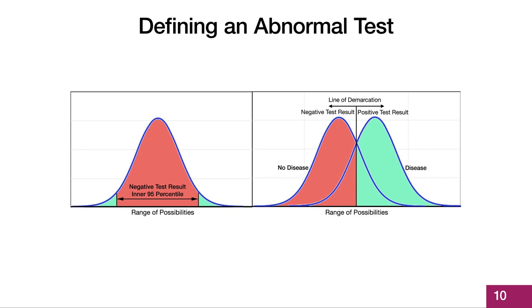We can use an understanding of probability distributions to help us understand how to define an abnormal test. There are two ways that we can define an abnormal test. With one method, shown on the left, we can take a group of people with no disease and a group with disease using some gold standard test. On the x-axis, we can then plot the results of a new test in these two groups. If the new test is useful, it would separate people with no disease and patients with disease into two distributions, and usually those distributions would have some overlap, as shown.